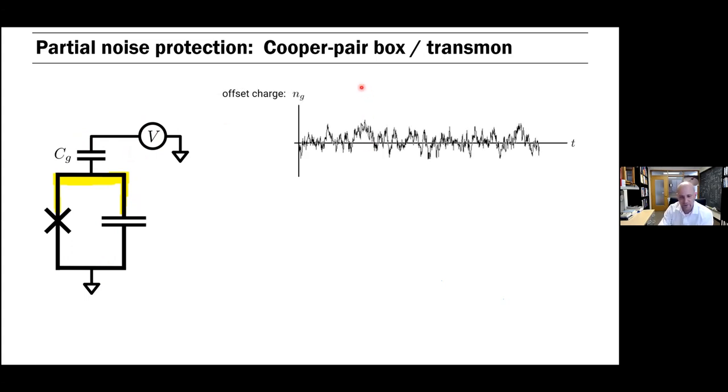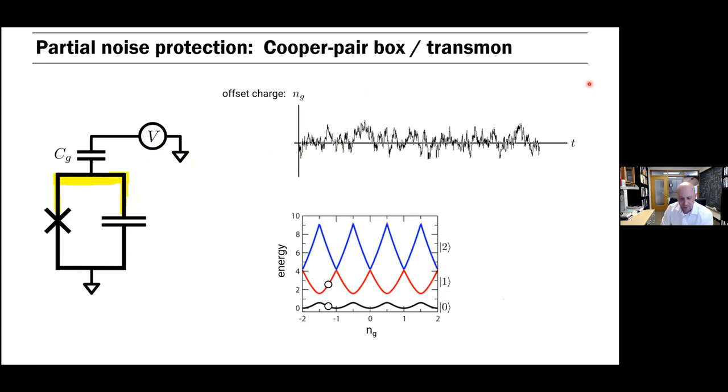Turns out that nature does that itself, but not in a very controlled way. So there are fluctuating charges in the vicinity of the circuit. Whatever it is, it produces a random gate voltage. And that is typically of one over f type. And we like to encode the influence of this gate voltage in terms of an offset charge. It's a dimensionless parameter, which just characterizes this charge offset here on this island. And you see, it's a noisy one over f signal as a function of time. And what does it do to our qubit? Now, if we plot the low-lying energy levels of the circuit, you see the ground state here as a function of this offset charge, the first excited state and so on.